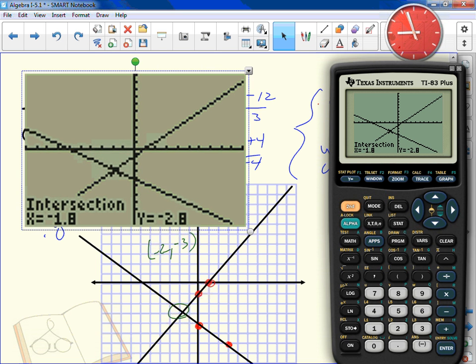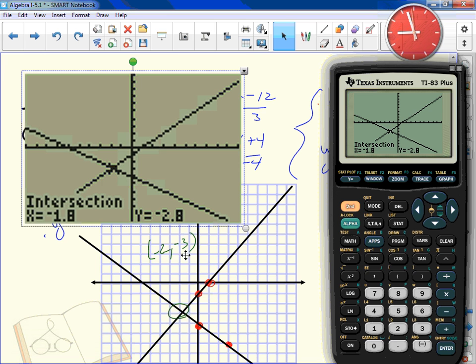We said the answer was negative 2, negative 3. Is that where they intersect at? Where do they intersect at? Negative 1.8, negative 2.8. I know what some people are thinking. Well, I'll just use the calculator to do all my graphs.